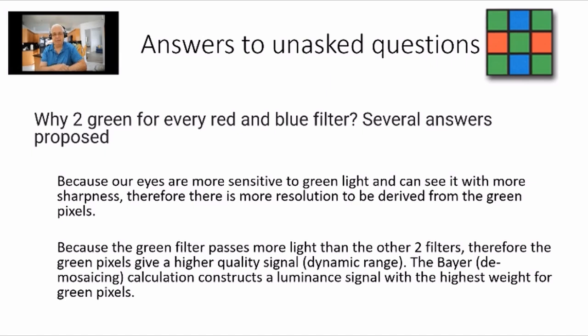Now, the other reason that benefits the use of more green than red or blue is that a green filter passes more light. Therefore, the green pixels have a higher quality signal, more dynamic range. So you're working off better data if you take the calculation. The Bayer, and it's also referred to as demosaicing, calculation actually weights the green data a little bit more than the red and blue because the higher the signal, the better quality the results.